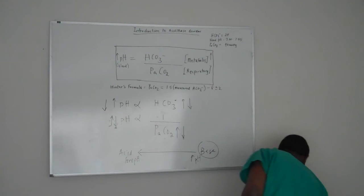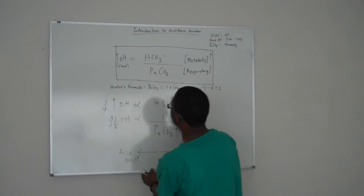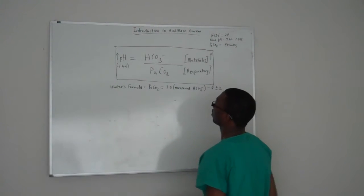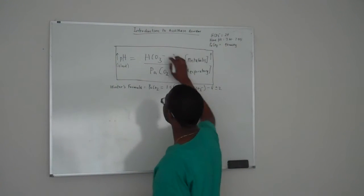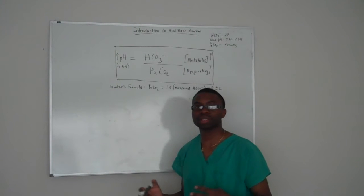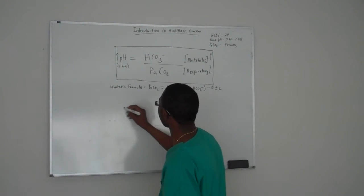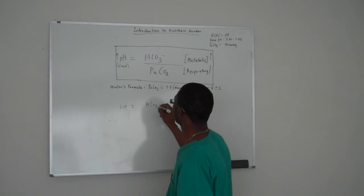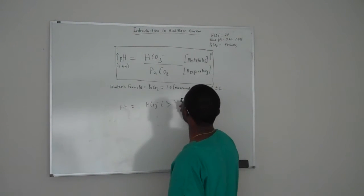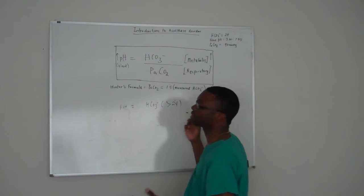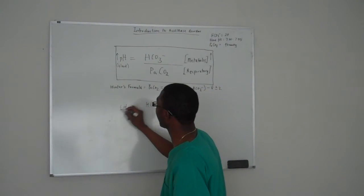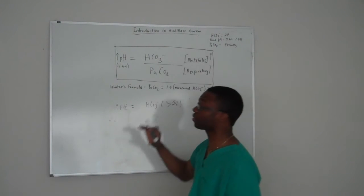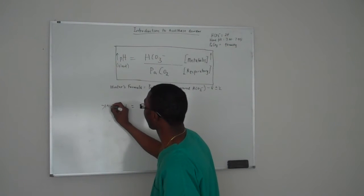Let me put that in a loose description for you. Let's pick bicarb just for illustration. If your bicarb goes up, let's say bicarb is greater than 24, let's call it 27 or 28, automatically you know your pH will go up. So we said your regular pH is between 7.35 to 7.45, so it's probably greater than 7.45.